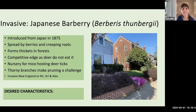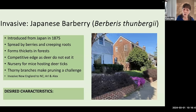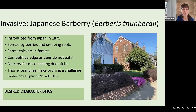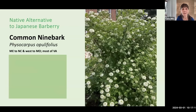Japanese barberry was introduced from Japan in 1875 and forms very deep thickets in forests. It has a particular competitive edge as deer do not eat it. In our home gardens, it provides the perfect atmosphere for the breeding of deer ticks and the mice that host them. In addition, its thorny branches make pruning challenging. It's now invasive from New England to North Carolina. An alternative native shrub with arching habit and fruit is Common Ninebark, Physocarpus opulifolius.